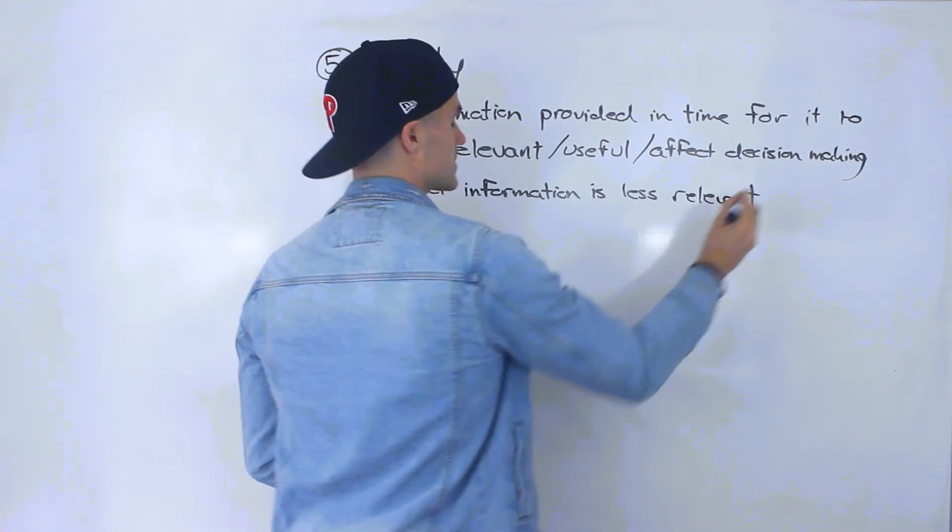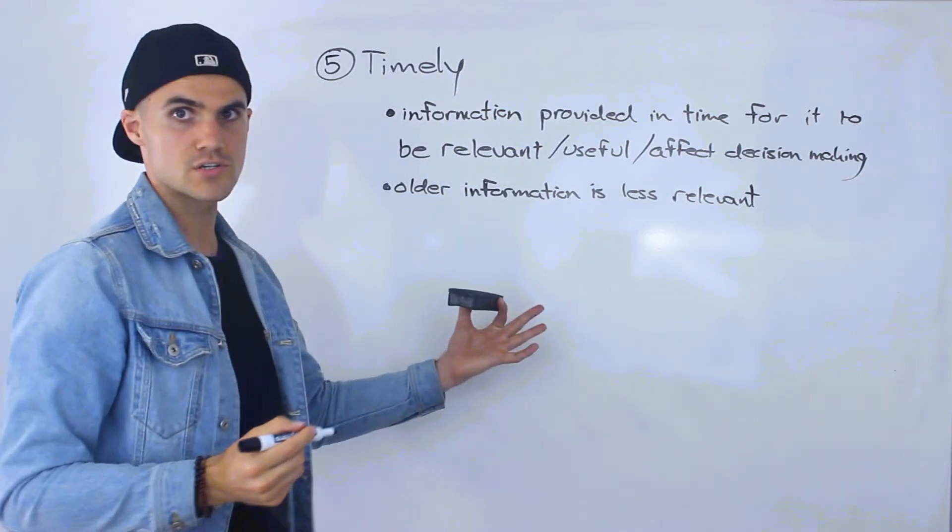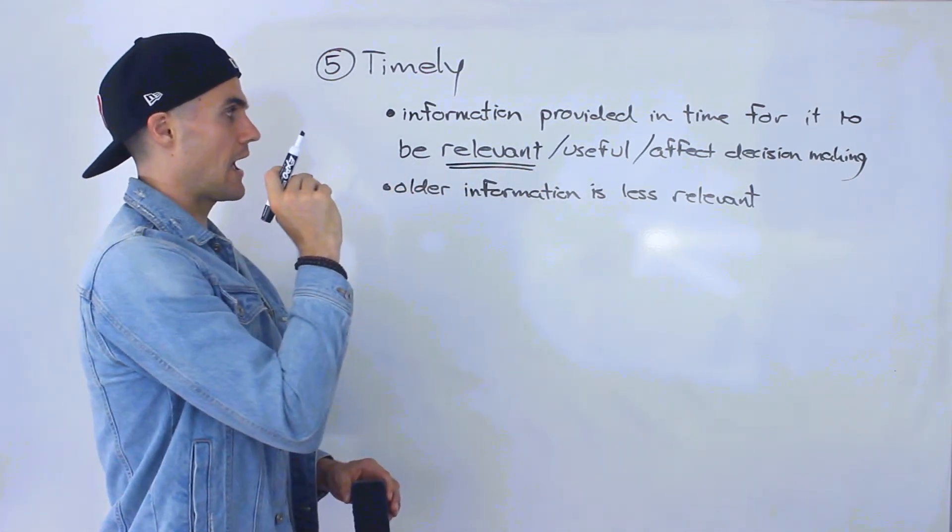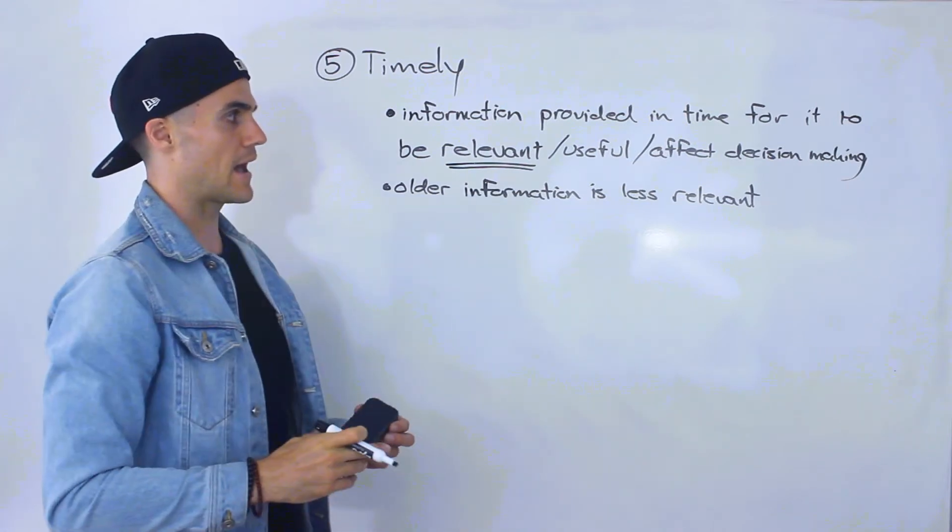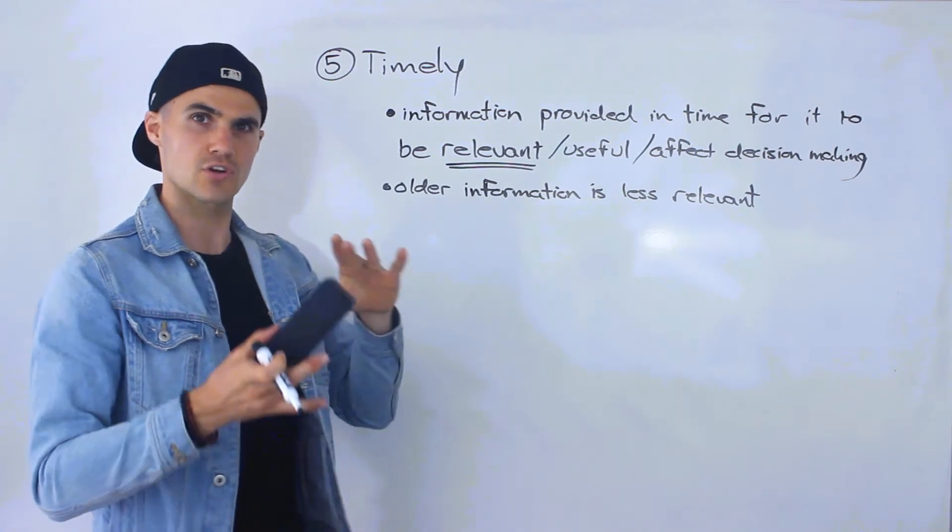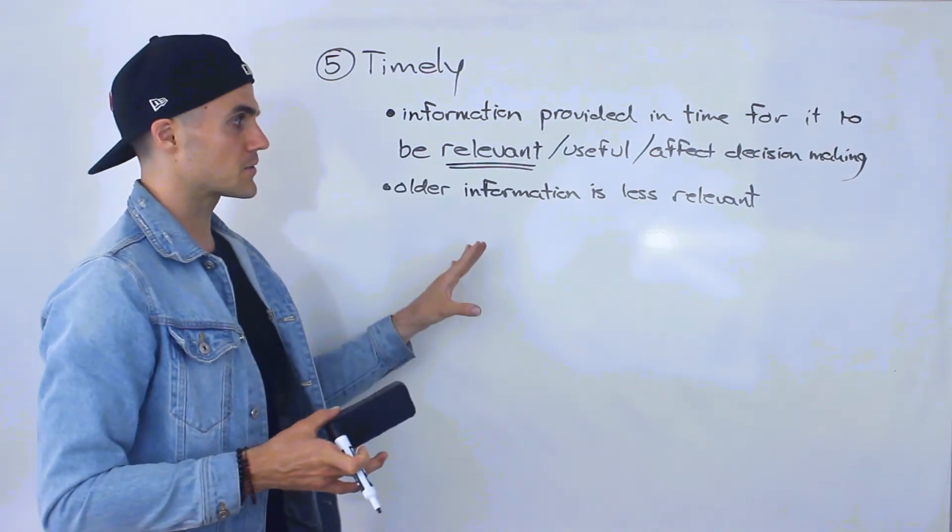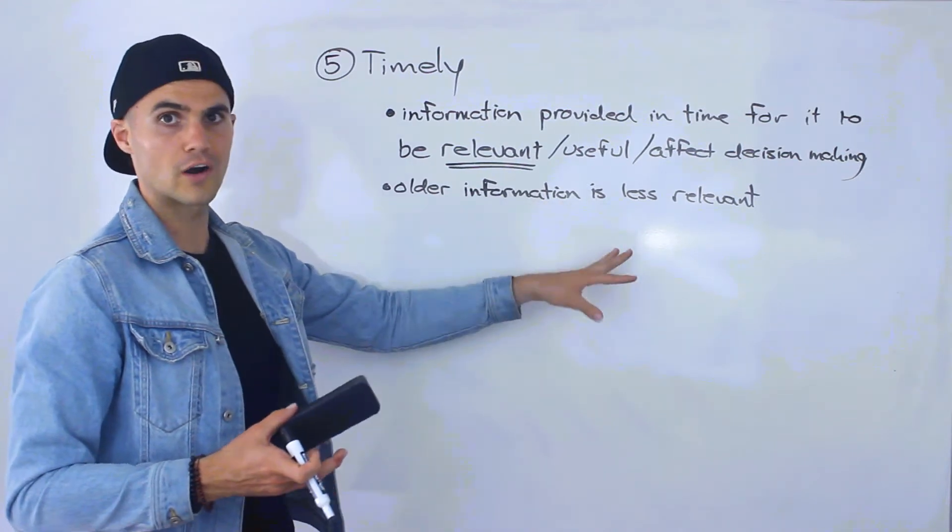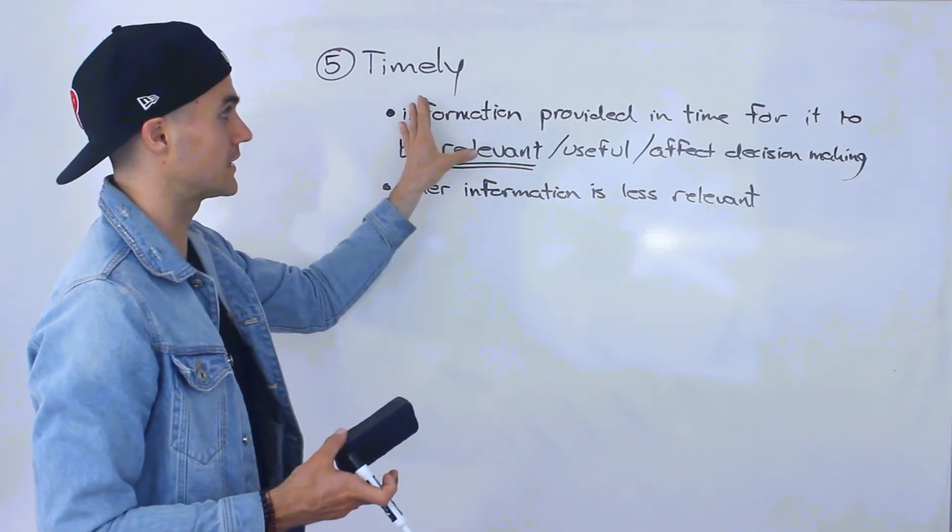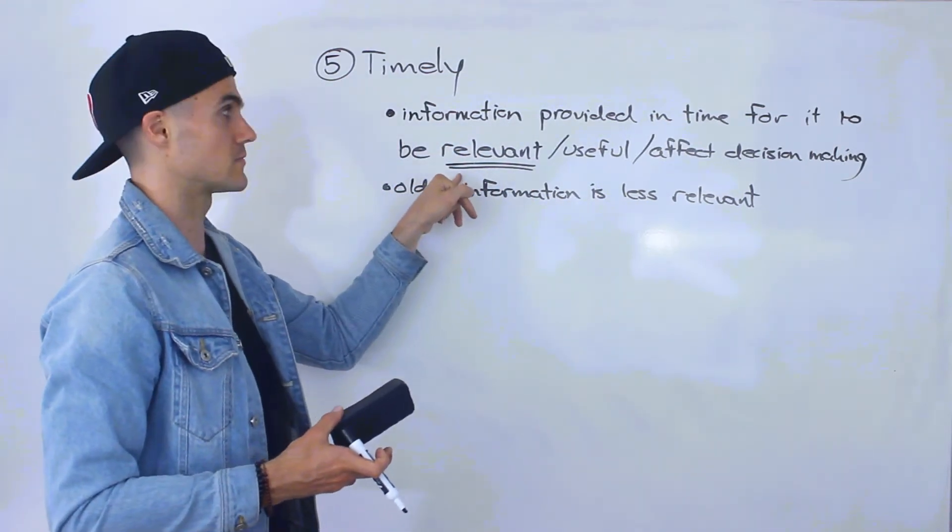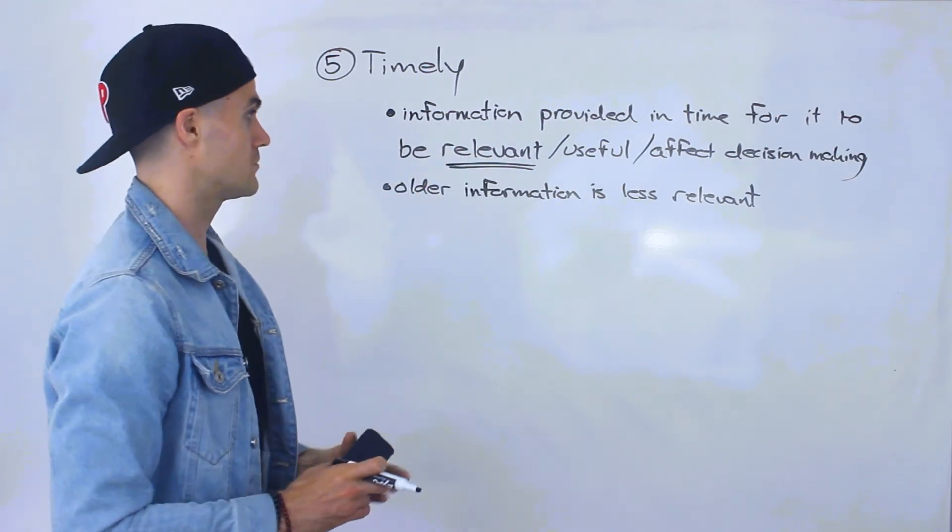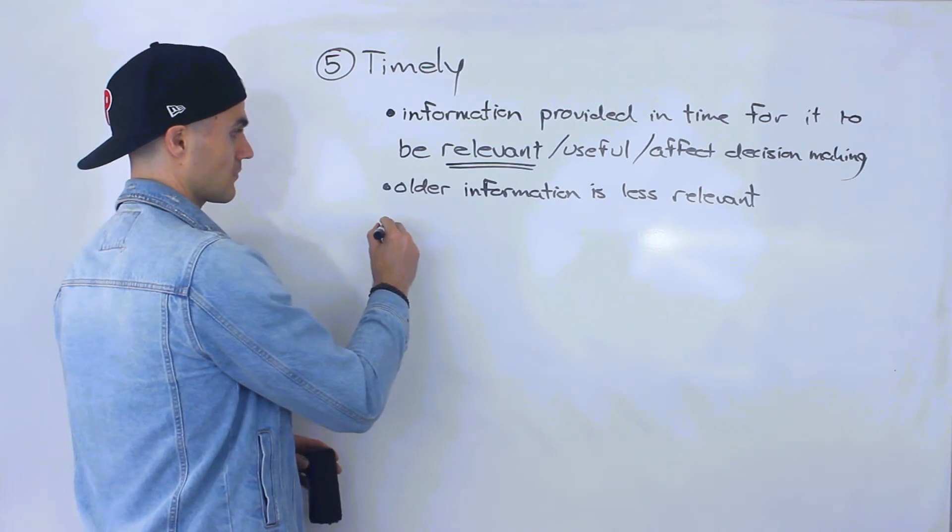And if you remember, relevance was that first characteristic that we went over. I mentioned at the beginning that the first two qualities, relevance and faithful representation, are the fundamental characteristics or qualities. And then the other four are enhancing qualities, with timely being one of the enhancing ones. So notice how timeliness enhances that relevance. It makes sure that information is provided in time for it to be relevant.